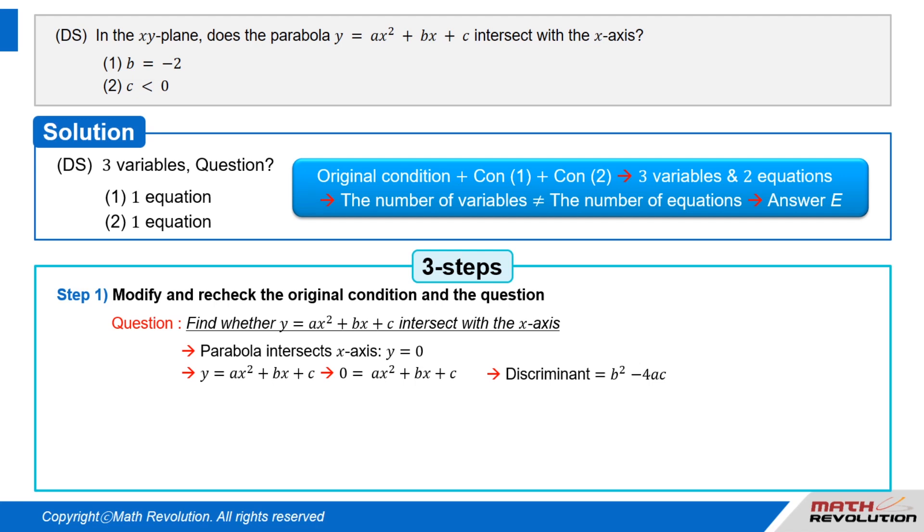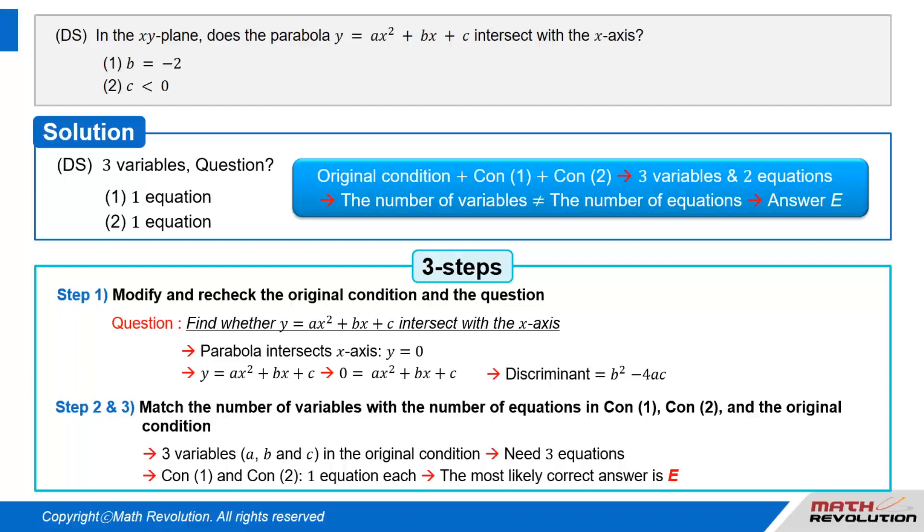We can use the discriminant b squared minus four times ac to determine the nature of the roots in any quadratic equation. Okay, there are three variables in a quadratic equation: a, b, c. That's why the most likely answer is e.